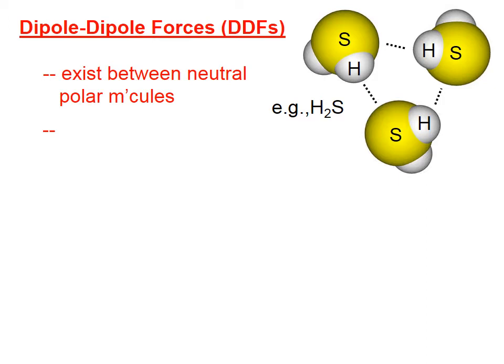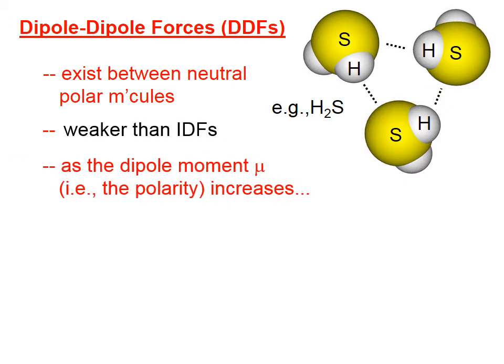Dipole-dipole forces exist between neutral polar molecules. For example, on the right side of the screen, hydrogen sulfide. This is very similar in some ways to ion-dipole forces, in the sense that sulfur being more electronegative and hydrogen being less electronegative, there is an attraction between the sulfur atom on one molecule and a hydrogen atom on another. That little attraction, represented with dotted lines, is called a dipole-dipole force. Typically these tend to be weaker than ion-dipole forces. As the dipole moment — that is, the polarity — increases, the strength of the dipole-dipole forces also increases.